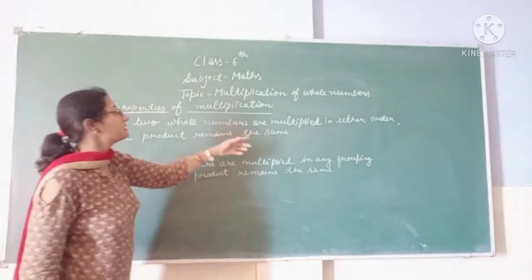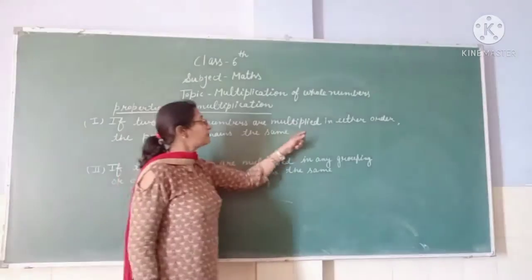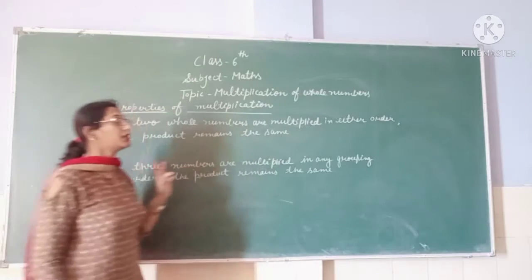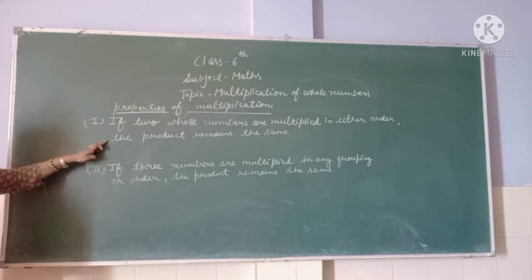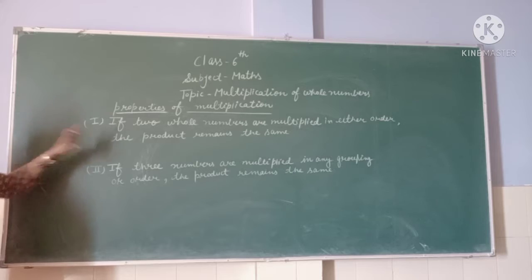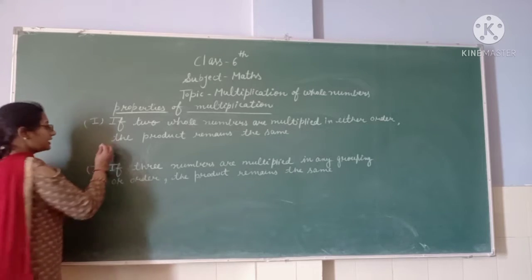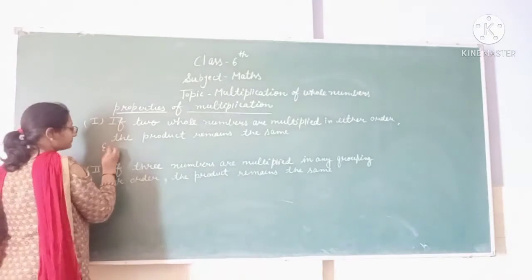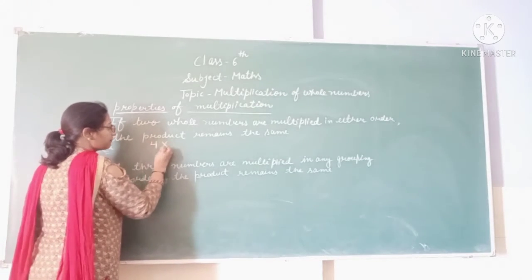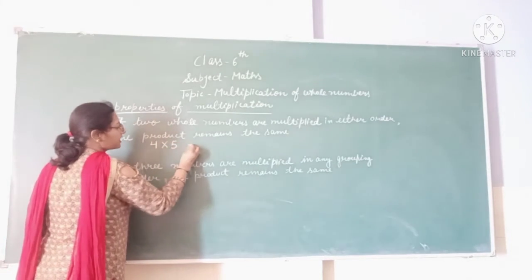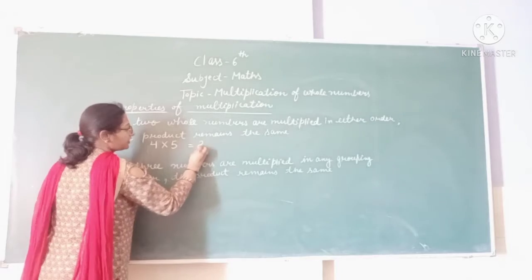If two whole numbers are multiplied in either order, the product remains the same. For example, here you see: 4 multiplied by 5 — 4 fives are 20.